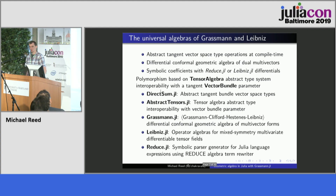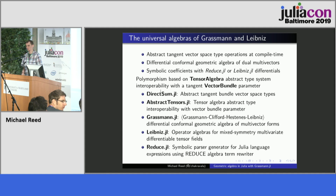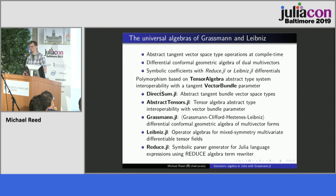We have a set of packages. At the root of it, there's a DirectSum package with a vector space type, and an AbstractTensors package which has an abstract type for tensor algebras with the vector space parameter. Then there's the Grassmann package, which is the anti-symmetric super-algebra we'll be talking about. There's also a Leibniz package, a prototype I'm working on for a mixed symmetry algebra with differential operators, and the Reduce.jl package — not required, but you can also use SymPy or other algebraic packages.